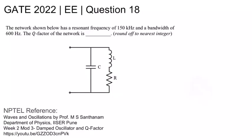This is GATE 2022 Electrical question number 18. The network shown below has a resonant frequency of 150 kilohertz and a bandwidth of 600 hertz. The quality factor of the network is being asked.